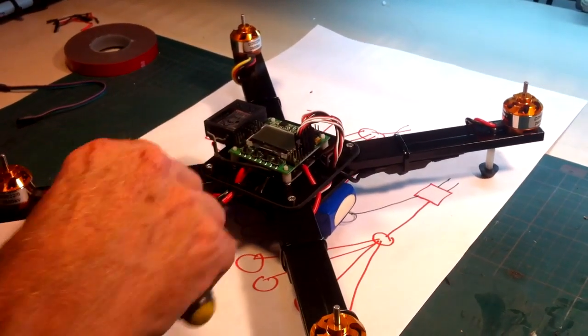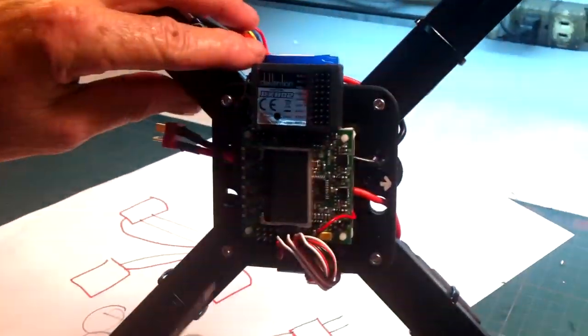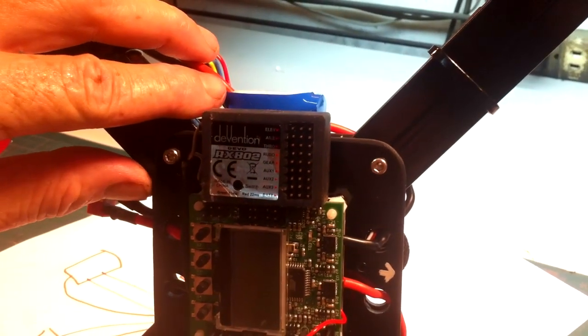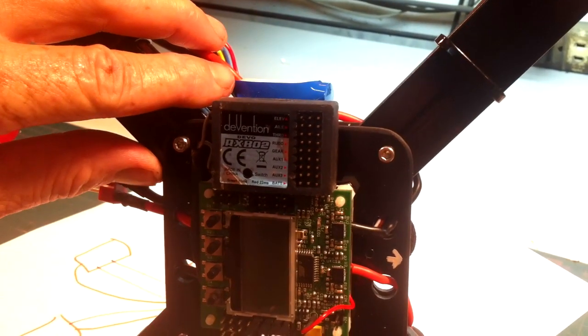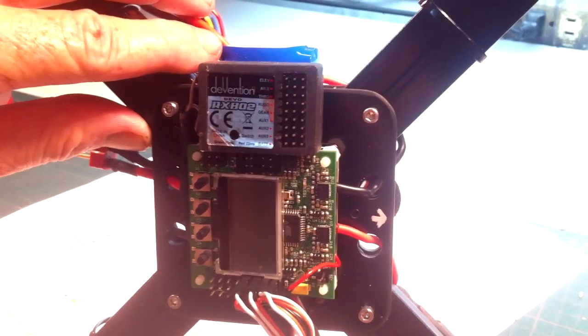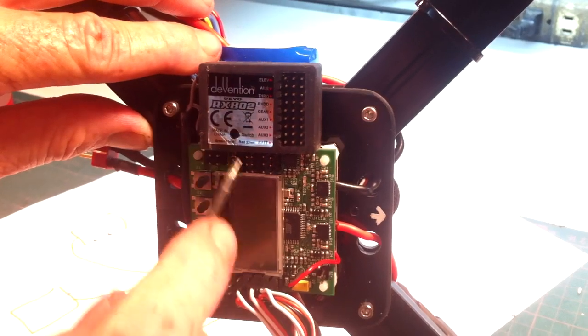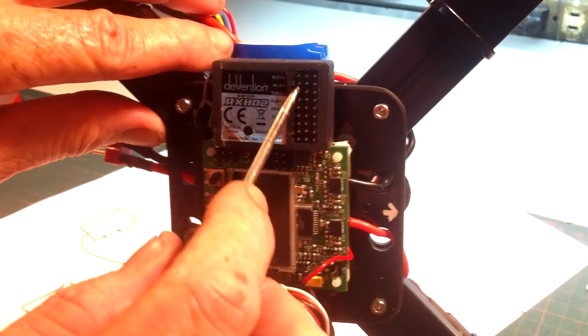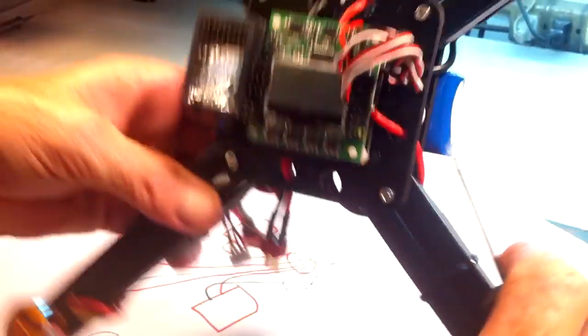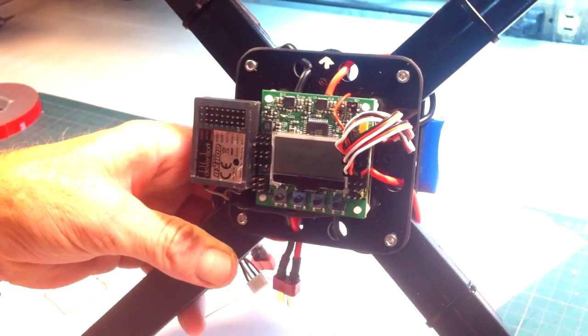Now how do you go about connecting this? On any receiver you get, each of your pins are going to be identified. If you read up about your receiver, you want to find out which pin is the positive, which pin is the negative for your current, and which one is your signal pin. On this receiver, the inside pins are my signal pins, and it's the same thing on the KK2 board where my inside pins are my signal pins.